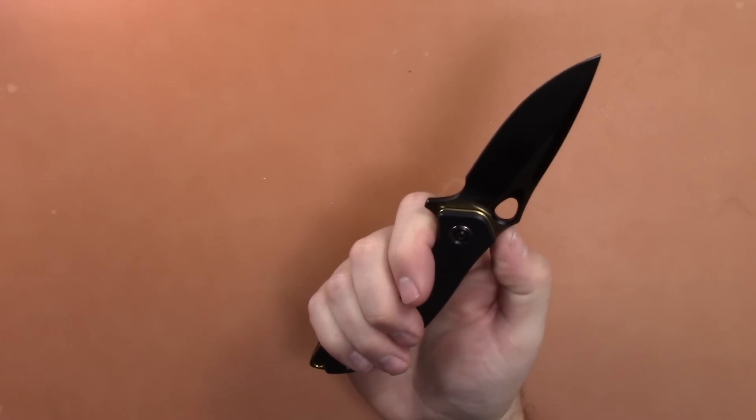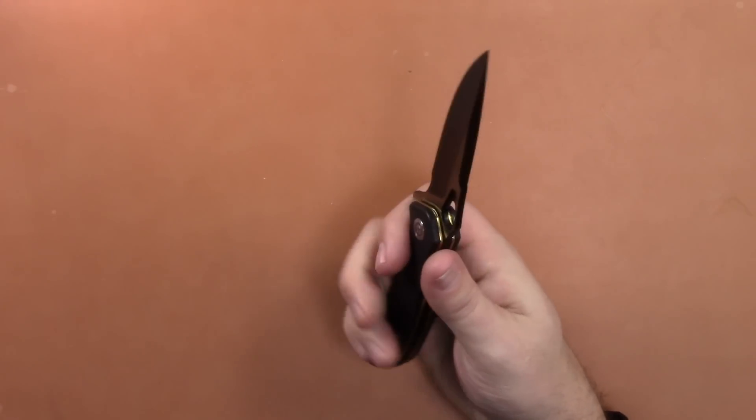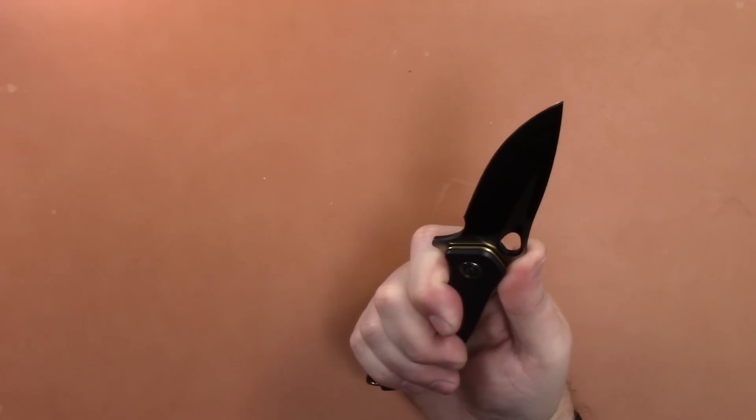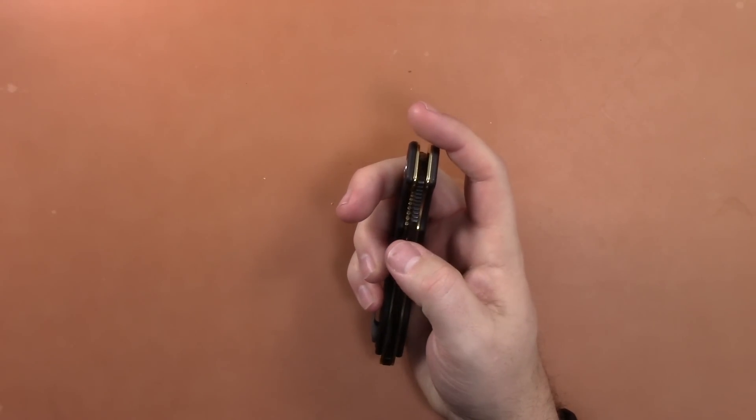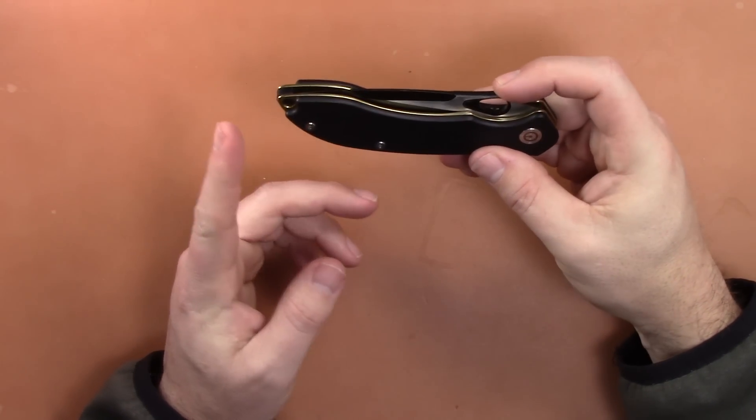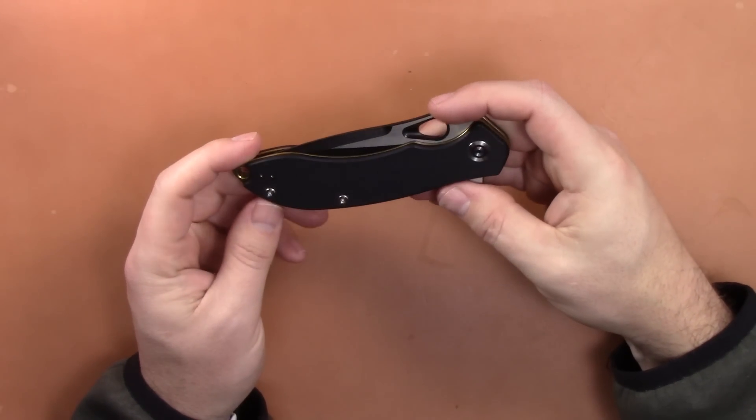When you actually put your thumb here on the hump here on the blade with the jimping where your hand rest is like right there, it's a really natural feeling. So you could have a little less handle. The blade to handle ratio is not the best. I think it's due to this lanyard hole, which I wish they would just kind of round that off and cut the handle by that much. And that would be about perfect.